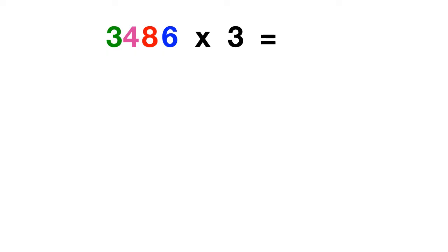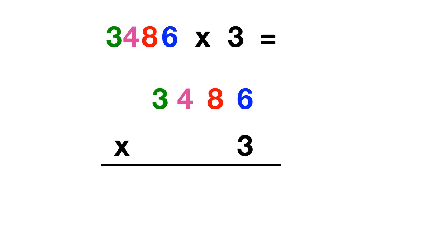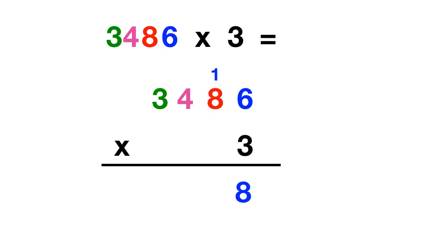Here's one more for today. Use this standard method to figure out what 3486 times 3 equals. If you write out 3486 times 3, you can start by multiplying 3 times these 6 ones. 3 times 6 is 18. Then you multiply 3 times 8 tens. That's 24, but 24 plus this 1 gives you 25.